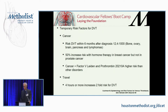Cancer: the risk of DVT within six months after diagnosis is significant, especially for metastatic cancer in the bone. Hormone therapy is a bit of a problem. Cancer combined with Factor V Leiden and prothrombin gene 2210A — that's a bad combination.